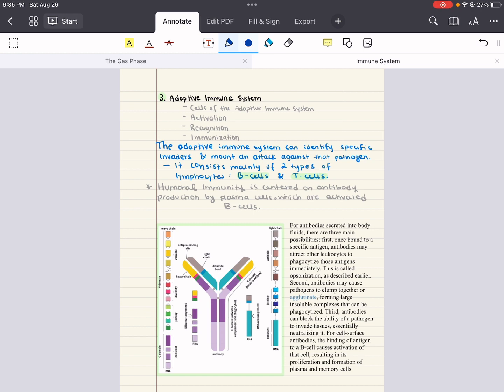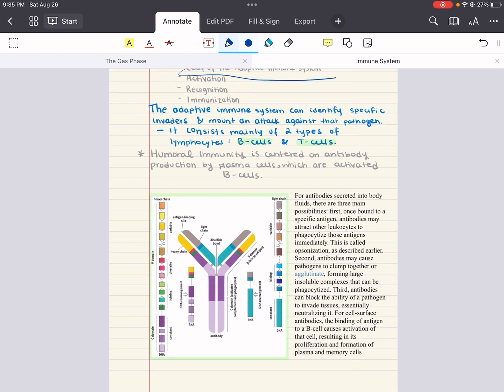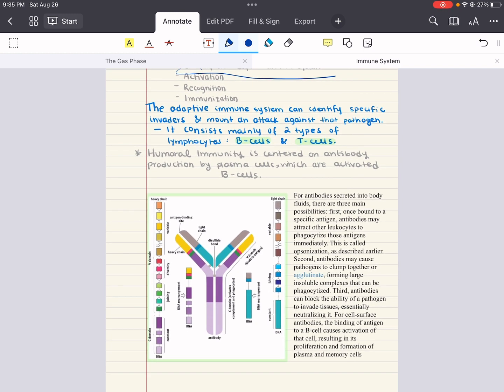We're going to start by talking about the cells of the immune system. The adaptive immune system consists of two types of lymphocytes: B cells and T cells. The B cells govern the humoral response while the T cells mount the cell-mediated response. All cells of the immune system are created in the bone marrow, but B and T cells mature in different locations. The B cells mature in the bone marrow and the T cells mature in the thymus.